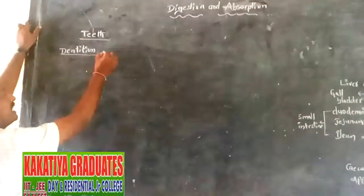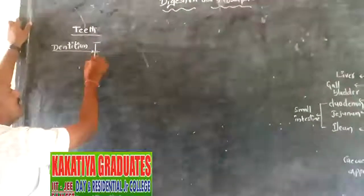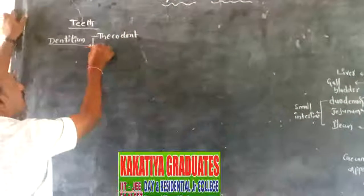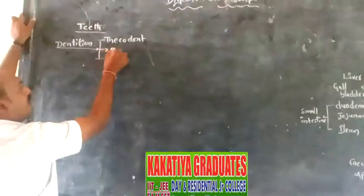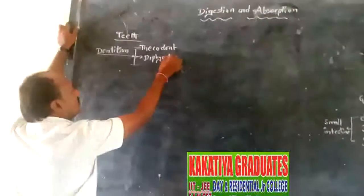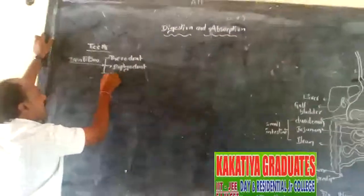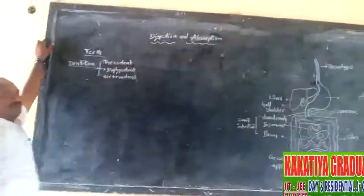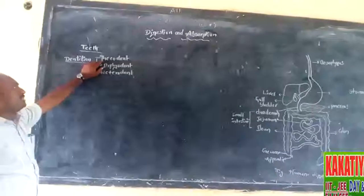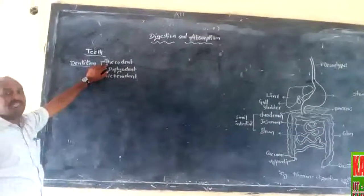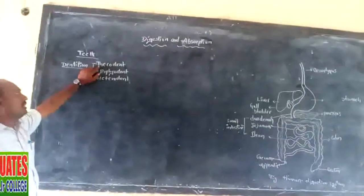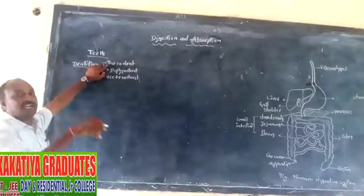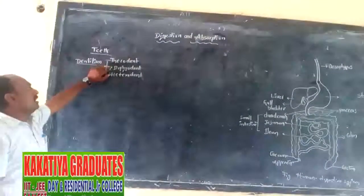Human dentition will be categorized into three types: thecodont, diphyodont, and heterodont. Thecodont means the teeth which are fixed at the socket of the jaw bone. Human teeth are fixed at the socket of the jaw bone — that is thecodont.